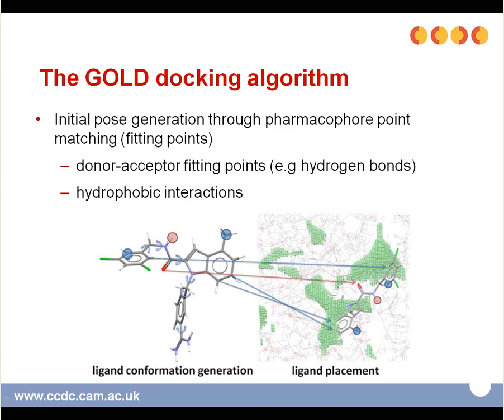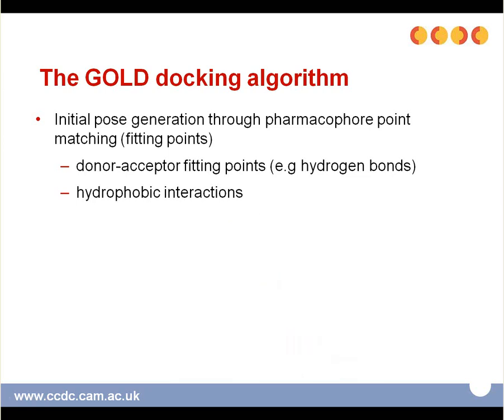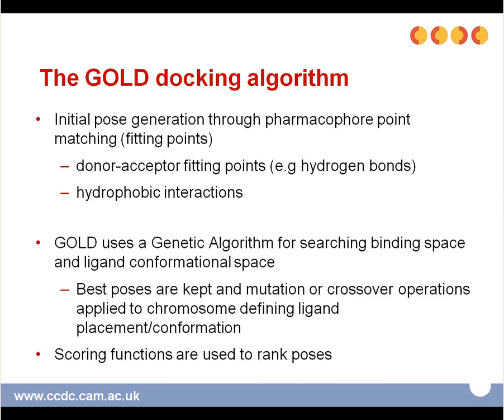The GOLD docking algorithm: initially, pose generation occurs through the matching of pharmacophore points, also called fitting points. This involves matching the donor-acceptor fitting points between the ligand and the protein, as well as hydrophobic interactions. GOLD uses a genetic algorithm for searching the binding space and the ligand conformational space. The best poses are kept and mutation or crossover operations are applied to the chromosome defining the ligand placement or conformation. Finally, scoring functions are used to rank poses.